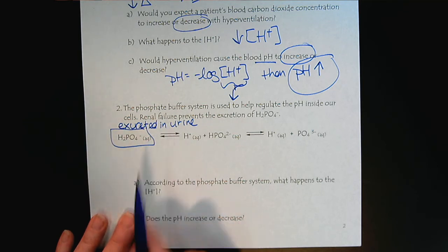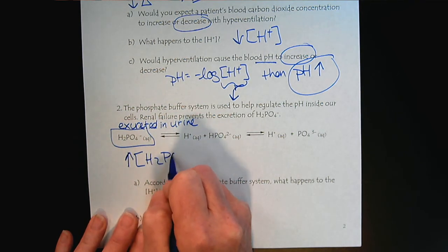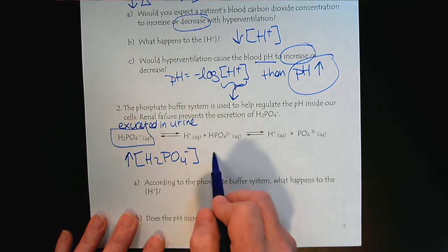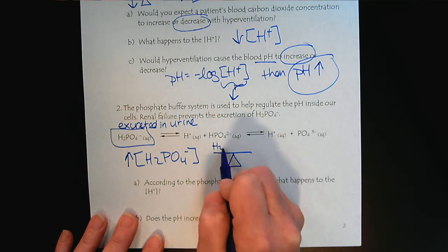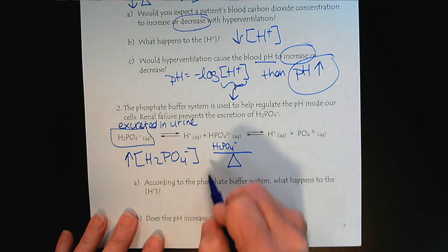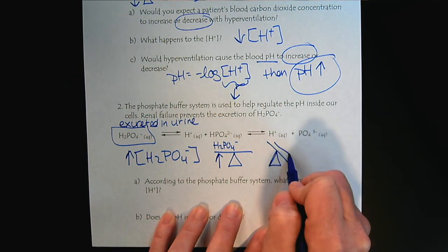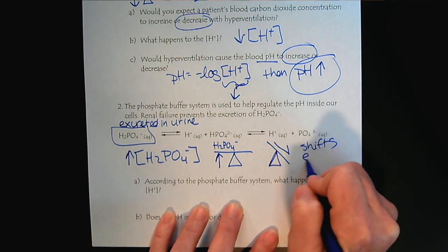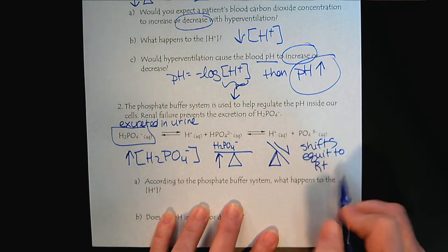We're going to get a buildup of dihydrogen phosphate. So renal failure is going to create an increase in the concentration of the dihydrogen phosphate. So let's put that onto our equilibrium teeter-totter. The dihydrogen phosphate is on the reactant side. So we are going to have an increase. That's going to push our teeter-totter to the right. So it shifts the equilibrium to the right, which is the products.